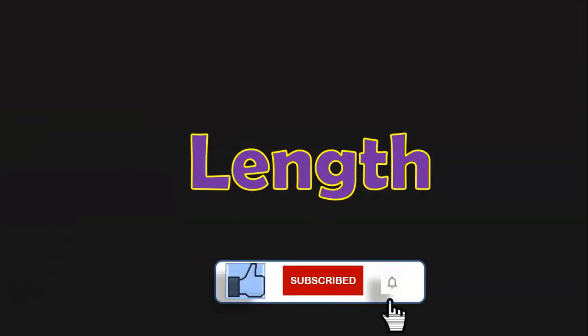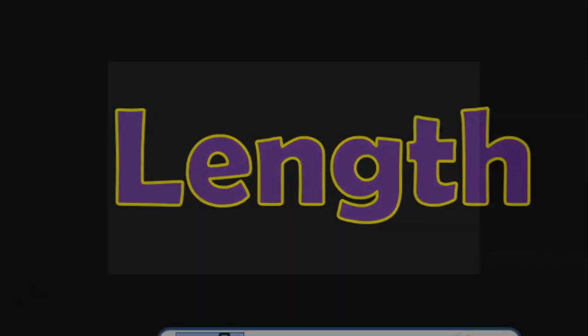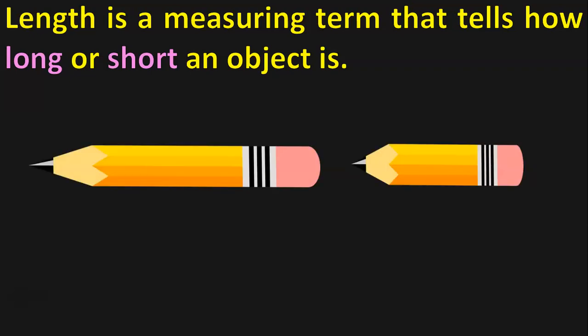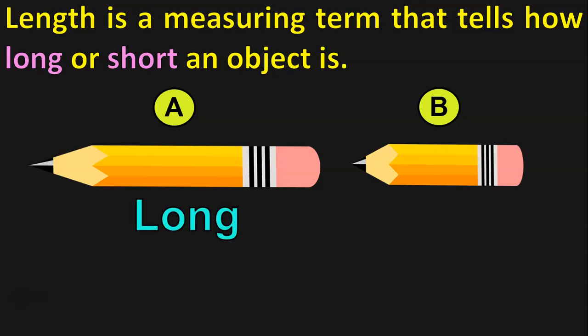In this segment, we will be seeing what are the different measurement terms related to measuring the length of an object. Length is a measuring term that tells us how short or long an object is. Let us understand this with an example. Here we have two pencils. Let us name them as Pencil A and Pencil B. Which is long here?